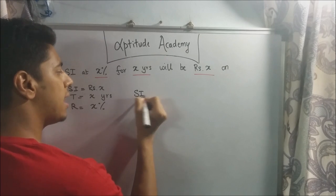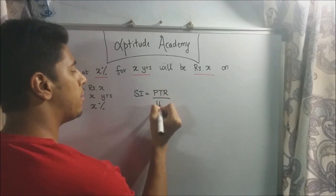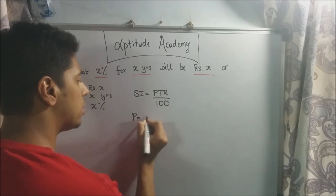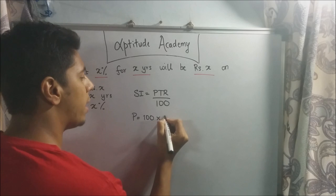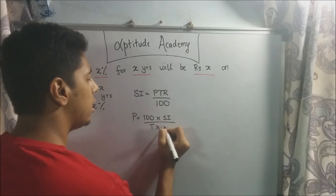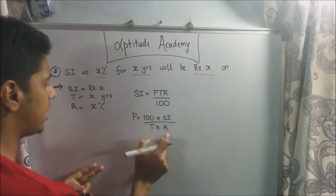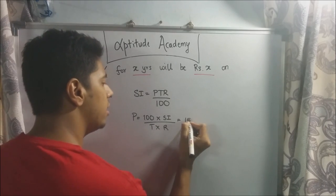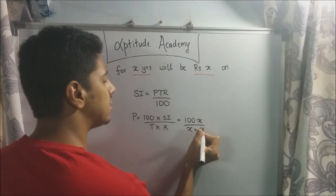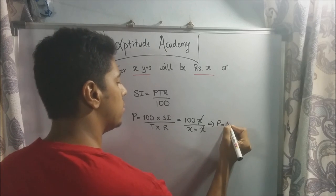Using the formula SI equals PTR divided by 100, we need to find the principal. So P equals 100 times SI divided by t times r. SI is x, t is x, and r is x, giving us 100x divided by x squared. One x cancels, so P equals 100 divided by x. That is your answer.